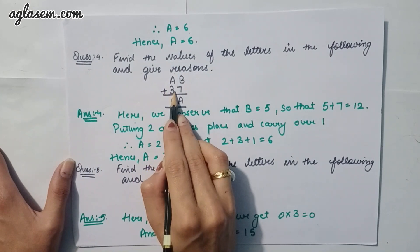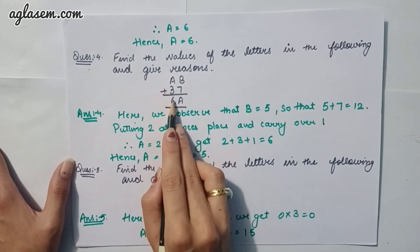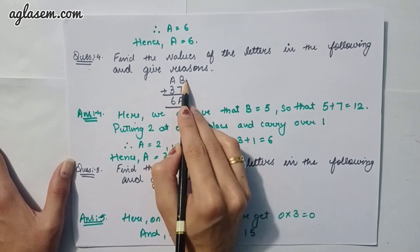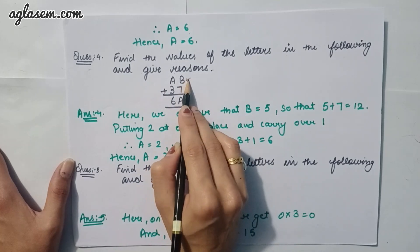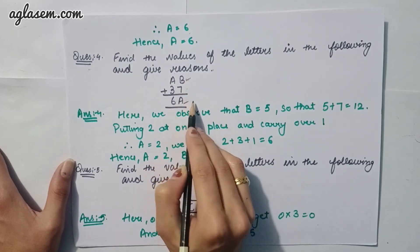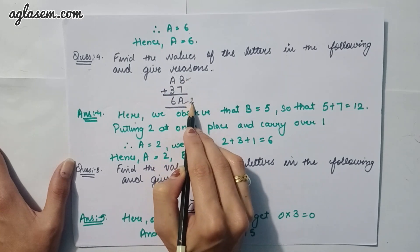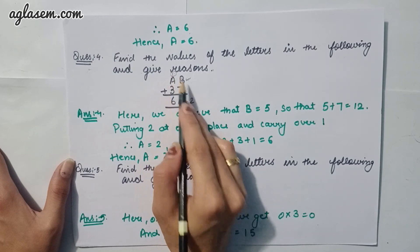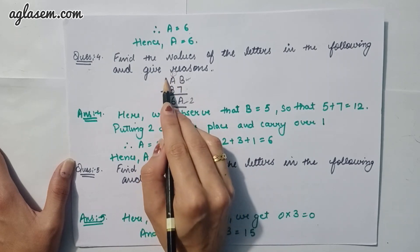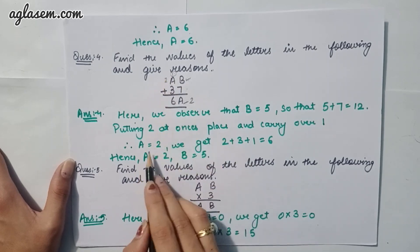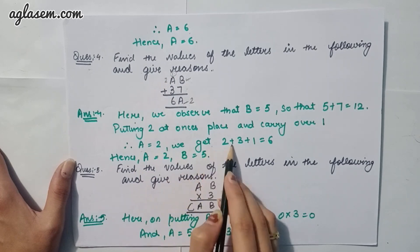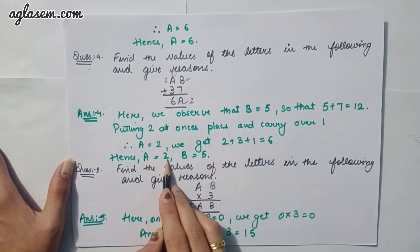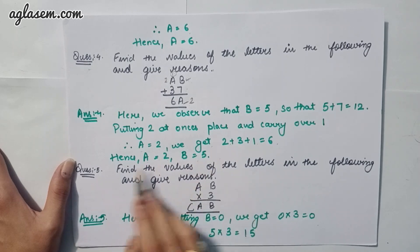The next question: find the value of letters — AB3 + 76 = A2. The answer: we observe B = 5, so 5 + 7 = 12, ones digit is 2, carry over 1. Then 3 + 1 = 4. For the hundreds place, 2 + 3 + 1 = 6, giving A = 2. Therefore A = 2 and B = 5.